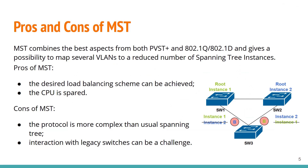Pros and cons of multi-spanning tree protocol. MST combines the best aspects from both PVST Plus, 802.1Q, and 802.1D standards, and gives a possibility to map several VLANs to reduce the number of spanning tree instances. Pros of MST: first, the desired load balancing scheme can be achieved; second, the CPU cycles are spared. Cons of MST: this protocol is more complex than usual spanning tree protocol.